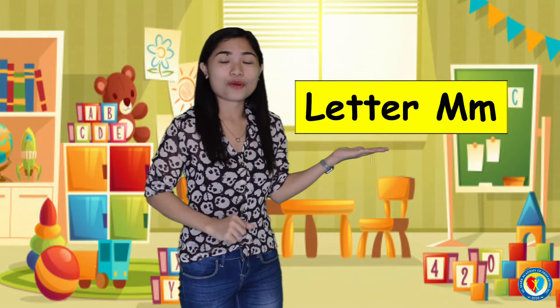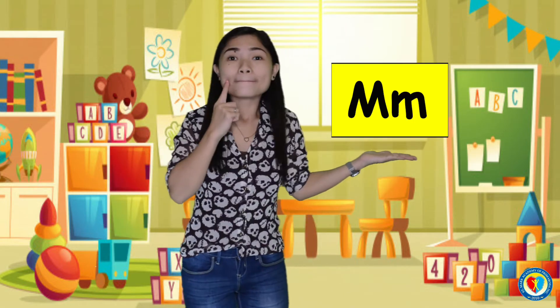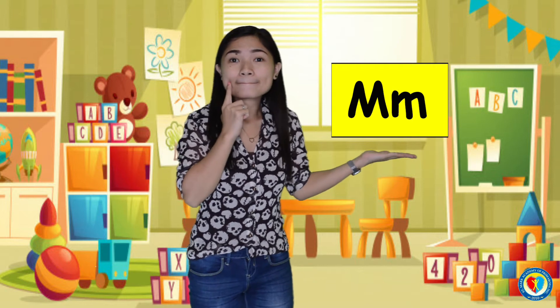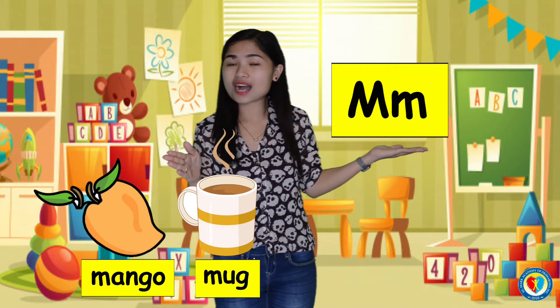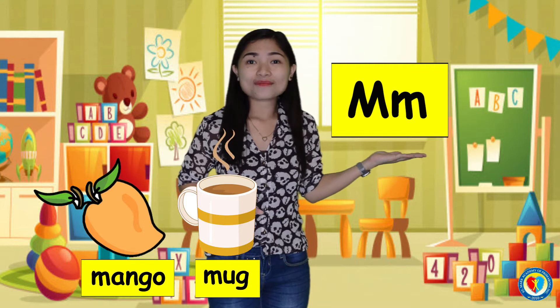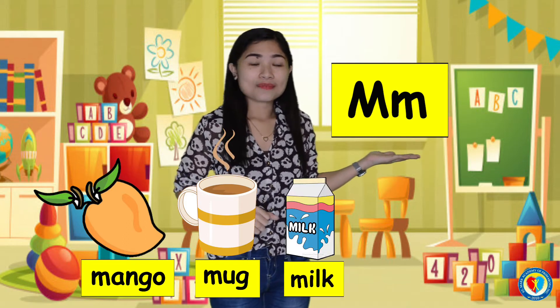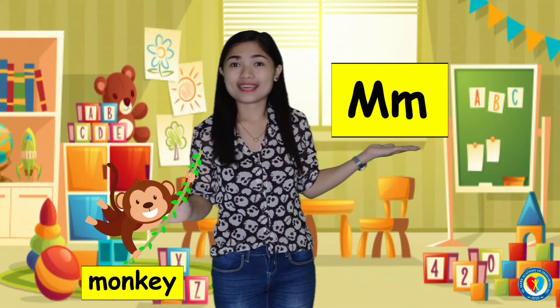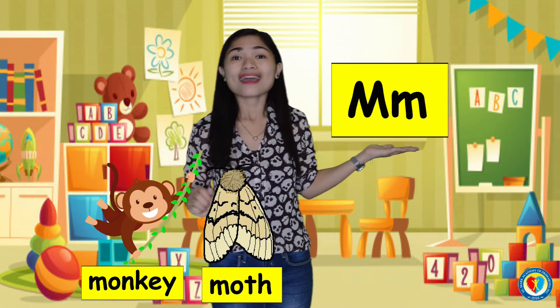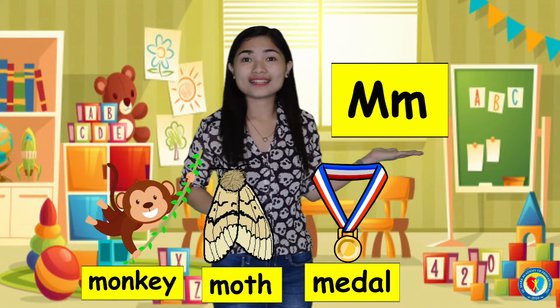But before that, let's sing a song first. Every letter has a sound like the sound of M. M is for mango, M is for monk, M is for milk, M is for map, M is for monkey, M is for mop, M is for metal.